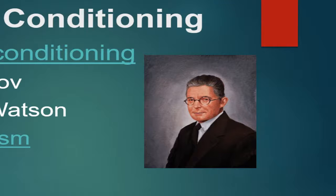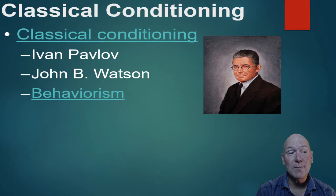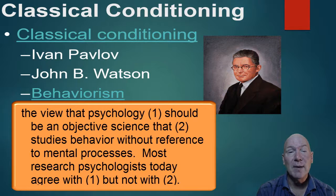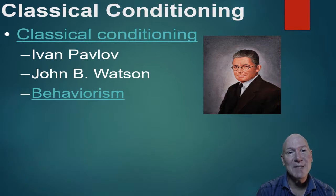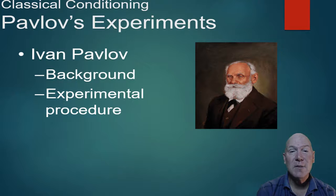John B. Watson followed up on this work. His school of thought was behaviorism, which was a major school of thought for about 50 years. Behaviorists argued that psychology can't be called a science if we're looking at things we can't see. Behaviors are observable things a person does that we can study, and that's what psychology should focus on.